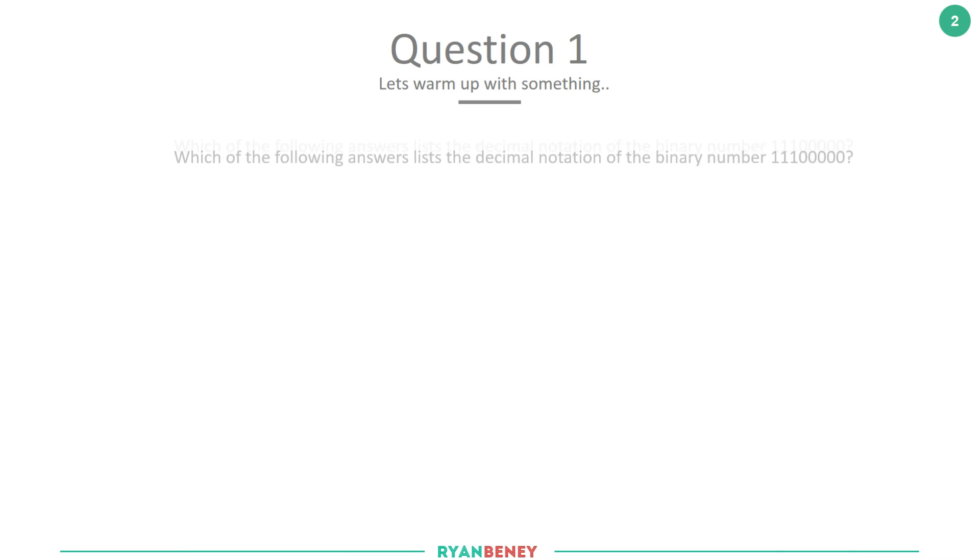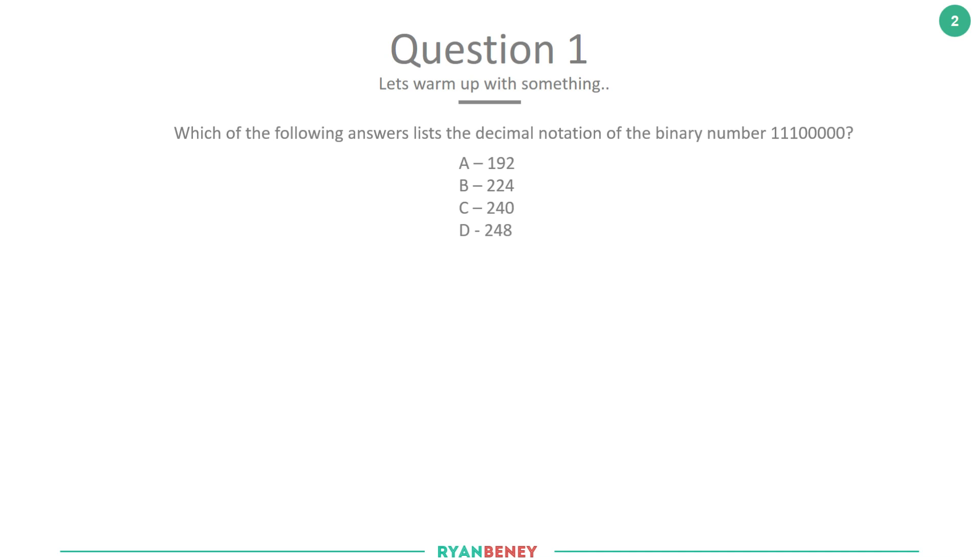Question 1: Which of the following answers lists the decimal notation of binary number 11100000? Options are A: 192, B: 224, C: 240, or D: 248. Pause the video, get pen and paper, and try to work out the answer. Once you have it, unpause and we'll go through the calculations together. With subnetting, repetition is key.